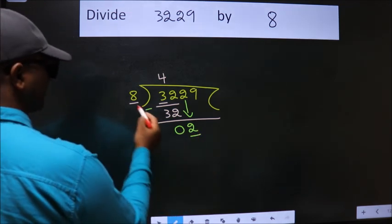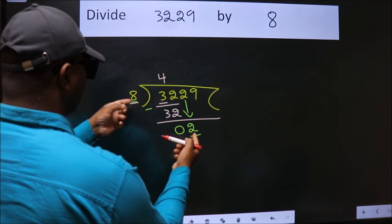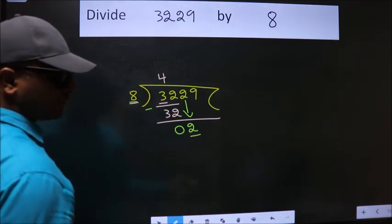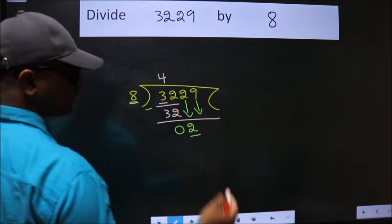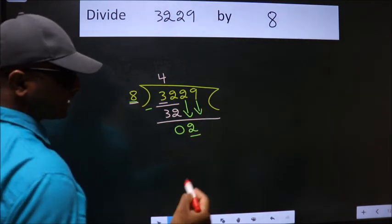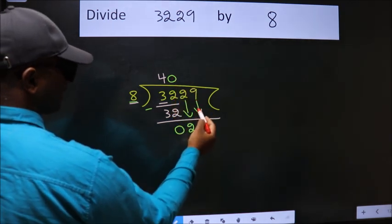Here we have 2, here 8. 2 is smaller than 8, so we should bring down the second number. And the rule to bring down second number is put 0 here. Then only we can bring down this number.